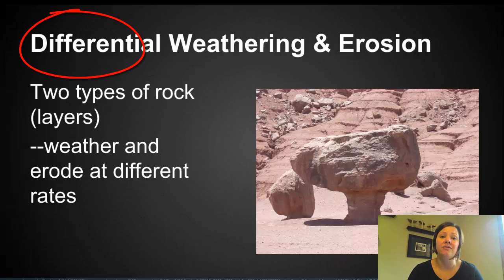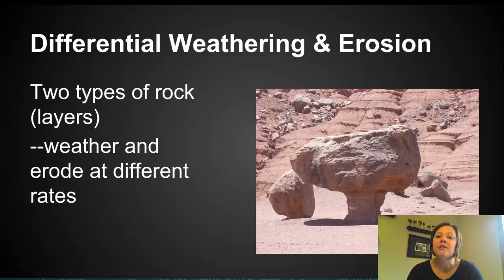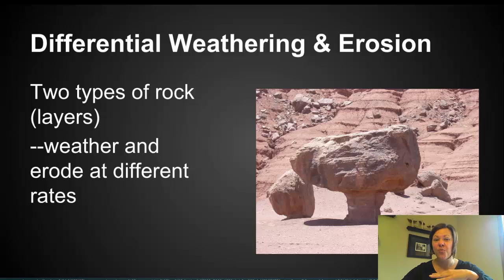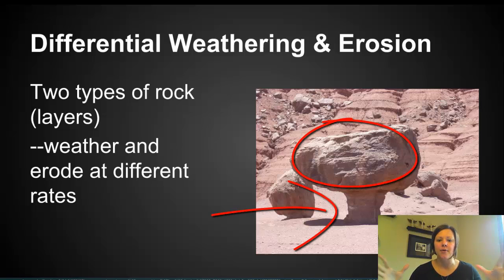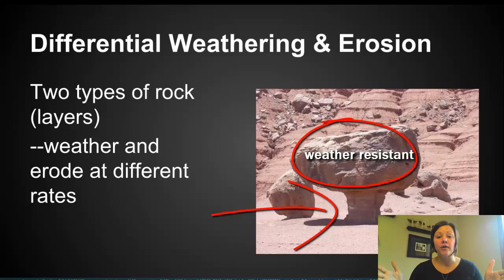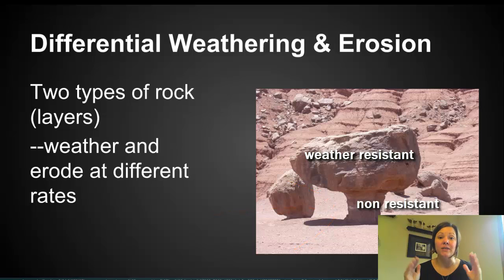Differential weathering and erosion — breaking the term down: 'differential' means 'different.' So differential weathering and erosion is when we're talking about two rock layers that are right next to one another, and they're weathering and eroding at a different rate from one another, which causes these crazy different land structures. You can see right here we have a picture of a big rock sitting on top of what looks like a small column. The top rock is more resistant to the weathering happening in that climate or area. We need to identify resistant rock layers versus non-resistant ones — meaning those that weather and erode at a much faster rate.